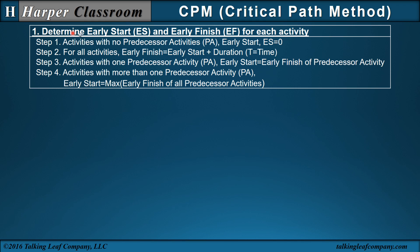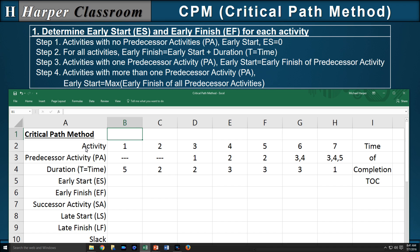Part one is to determine the early start and early finish for each activity. In Excel, I've typed in the definition of a project with the activities, the predecessor activities, and the duration of each activity. The Critical Path Method is made up of the early start and early finish, successor activity, late start, late finish, and slack — all of which we'll determine with the CPM algorithm.